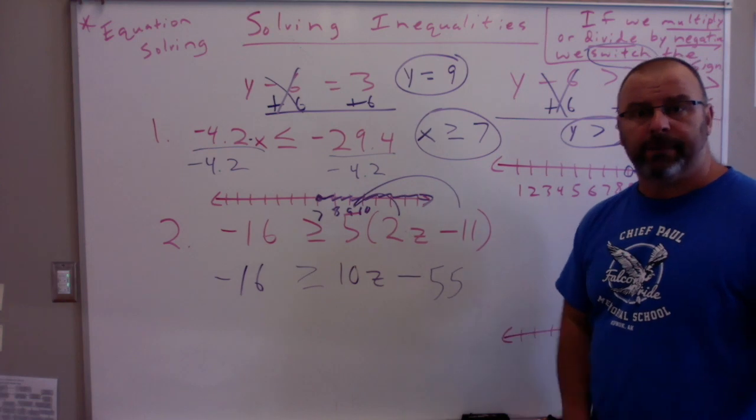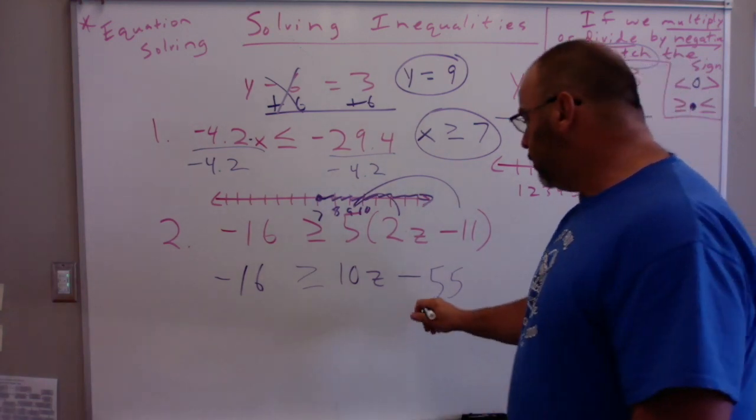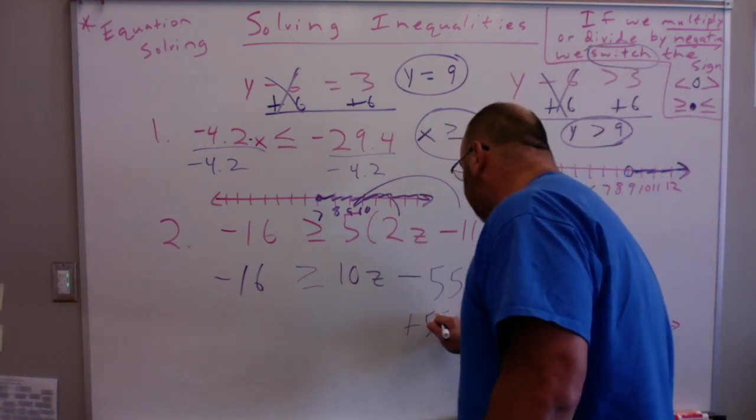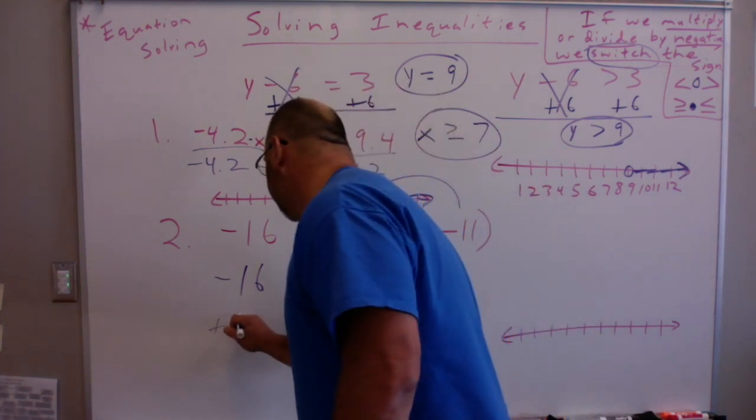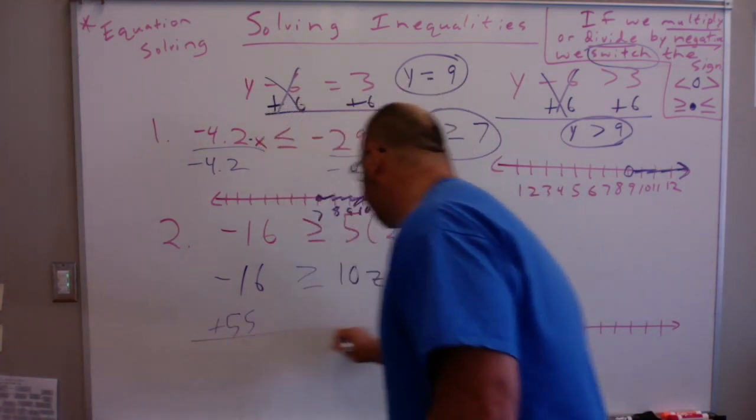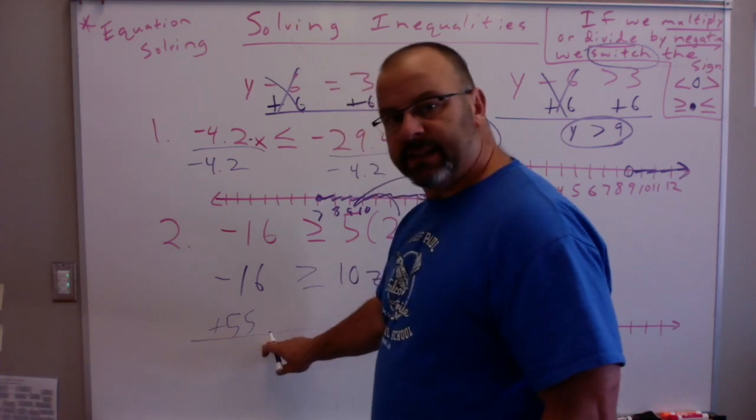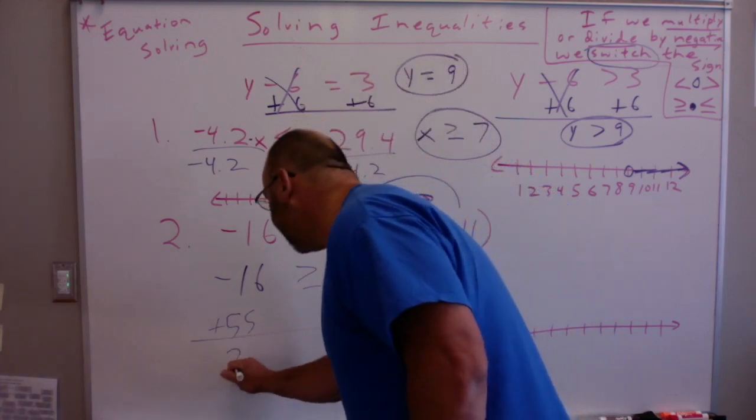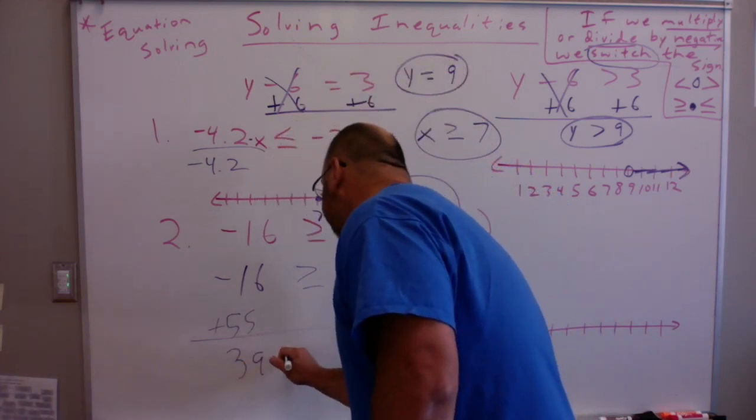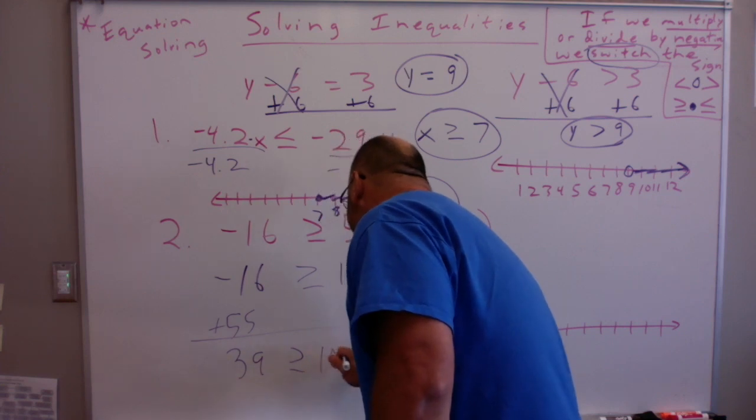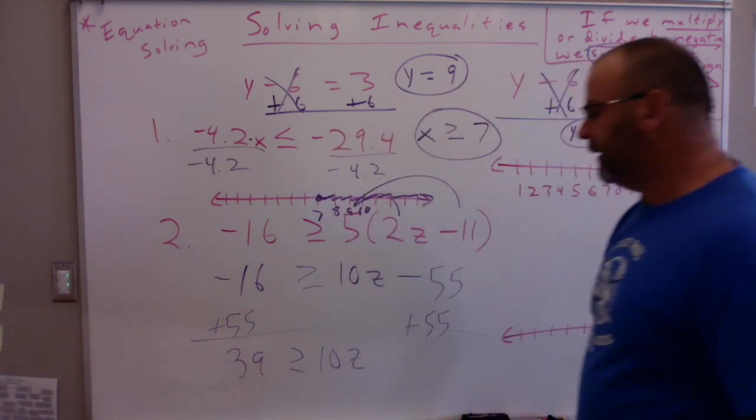Now, this comes down to a two-step equation. I'm going to add 55 to both sides of the equation. I'm going to undo that subtraction first. So I get this plus this ends up being 39 is greater than or equal to 10z.